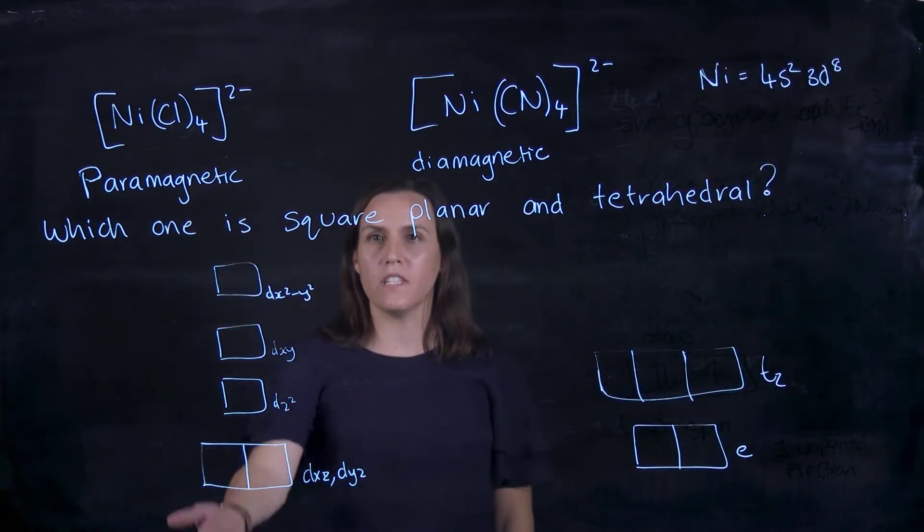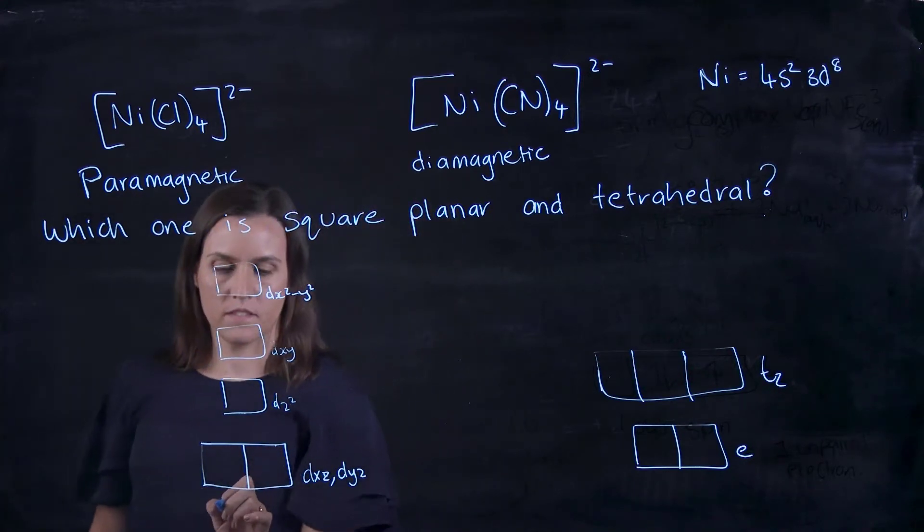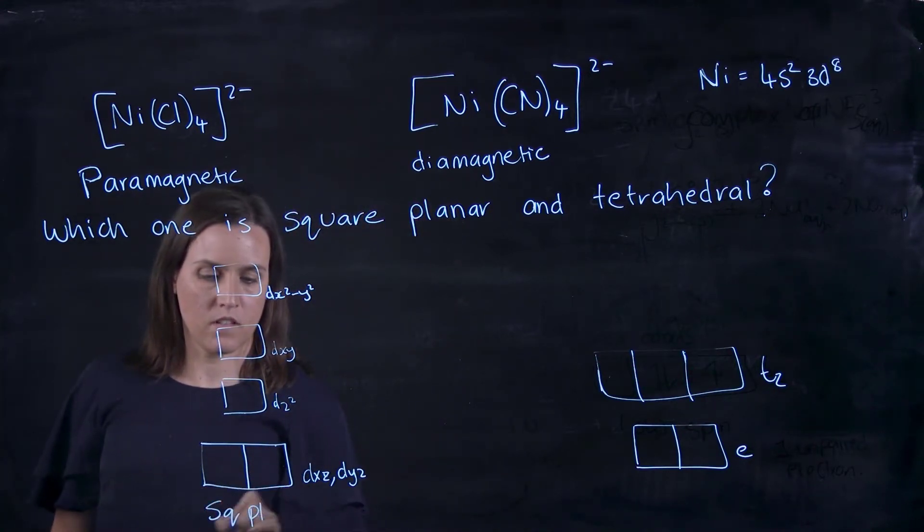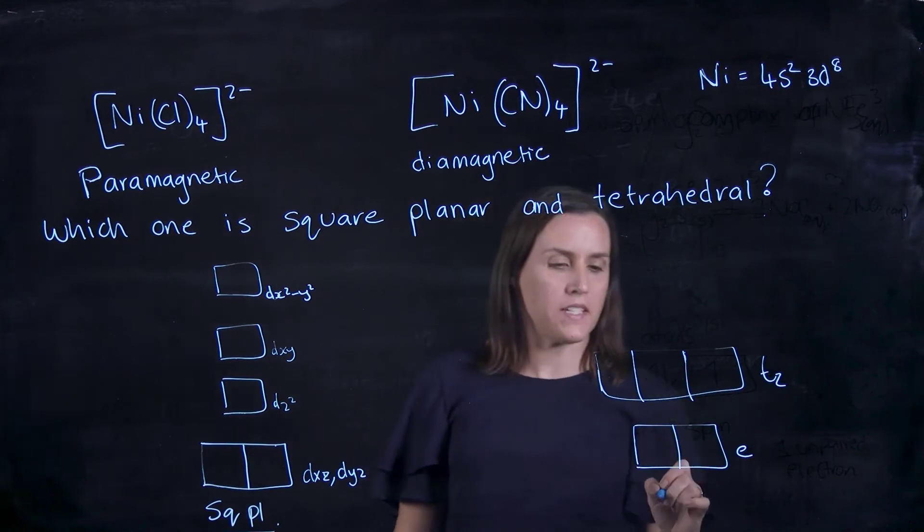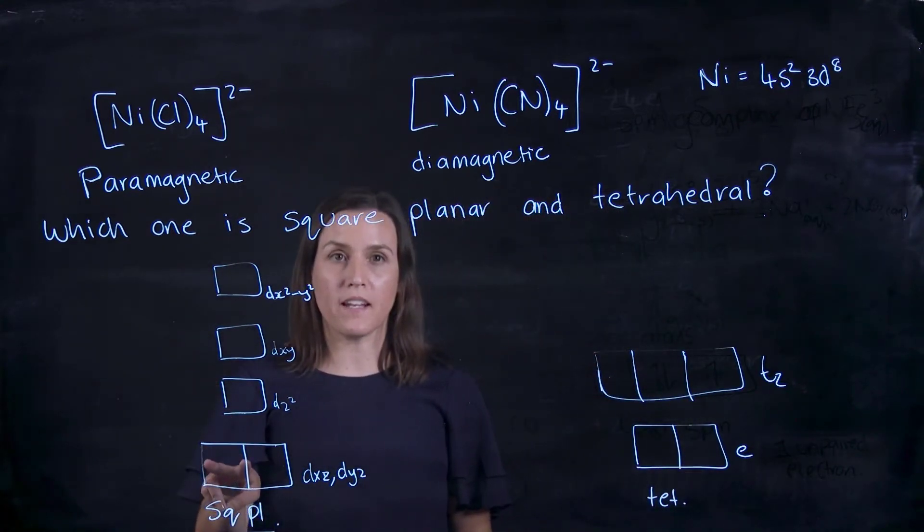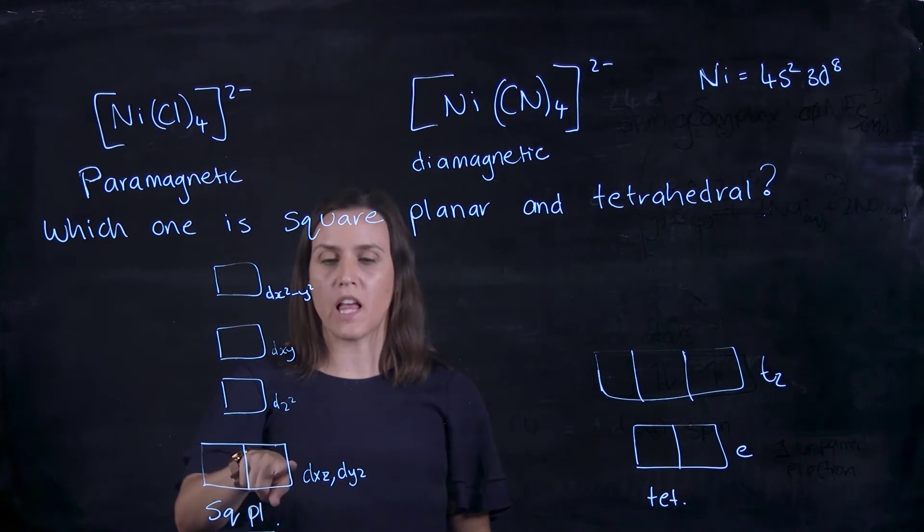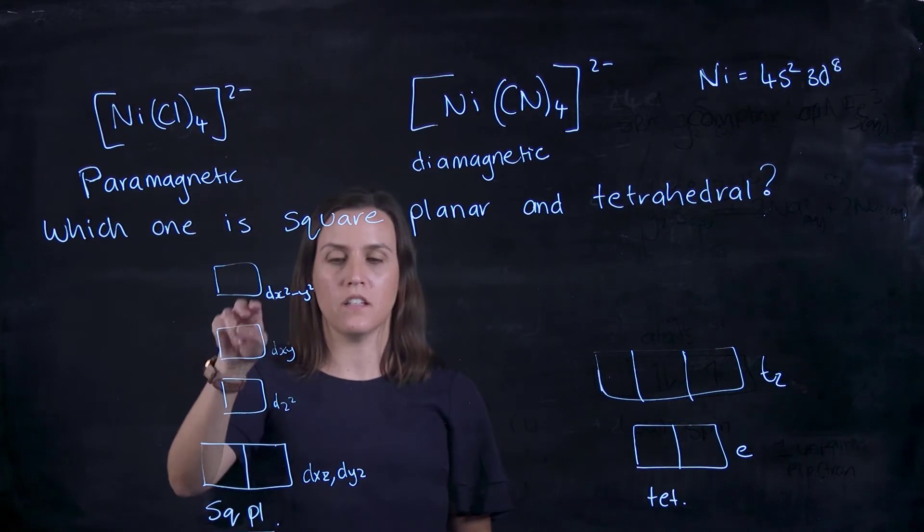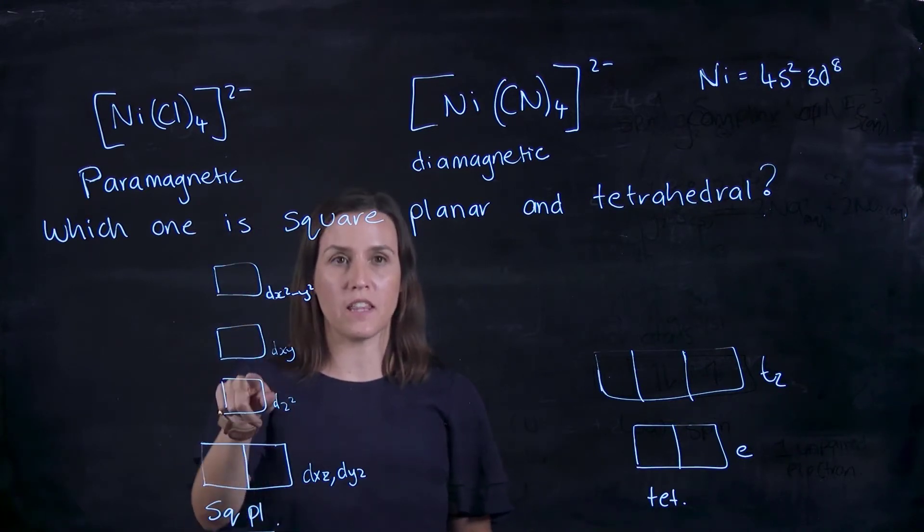This is my square planar, and this is my tetrahedral. When I fill up my square planar, it's low spin, so I completely fill each orbital before moving to the next energy level—fill the first two, then the next one, then the next one, then the next one.